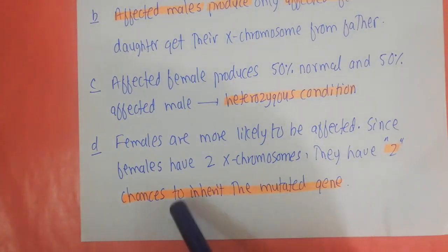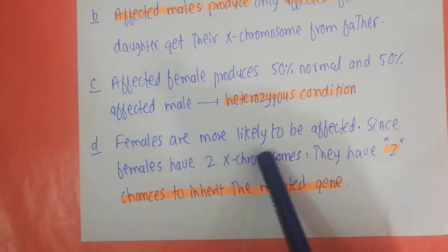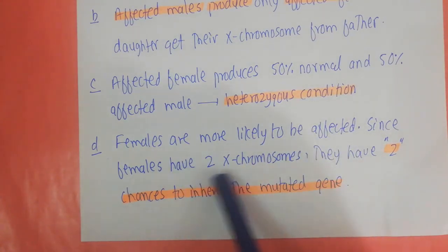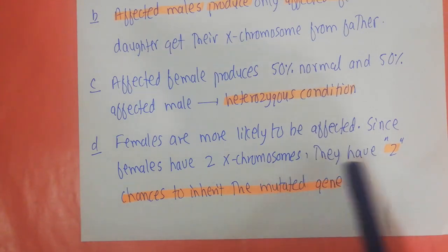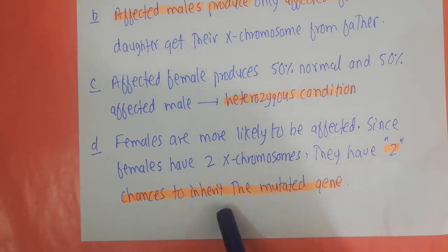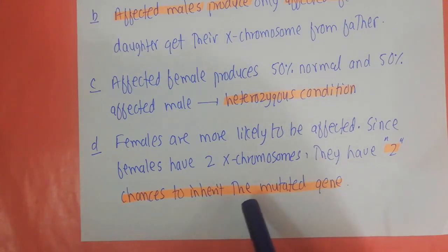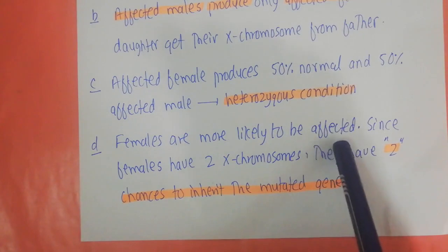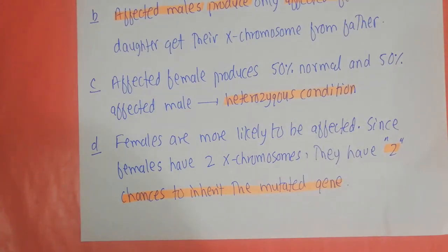For X-linked dominant traits, females are more likely to be affected. Since females have two X chromosomes, they have two chances to inherit the mutated gene — from their mother or from their father. Therefore, females are more likely to be affected in X-linked dominant conditions.